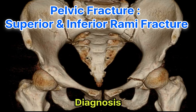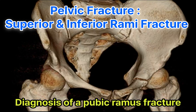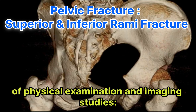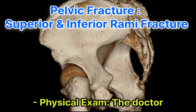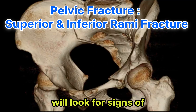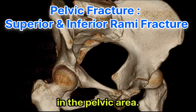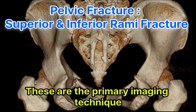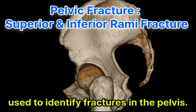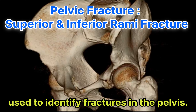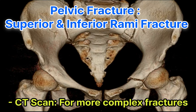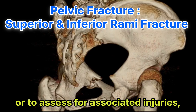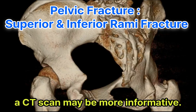Diagnosis of a pubic ramus fracture typically involves a combination of physical examination and imaging studies. The doctor will look for signs of pain, swelling, and bruising in the pelvic area. X-rays are the primary imaging technique used to identify fractures in the pelvis. For more complex fractures or to assess for associated injuries, a CT scan may be more informative.